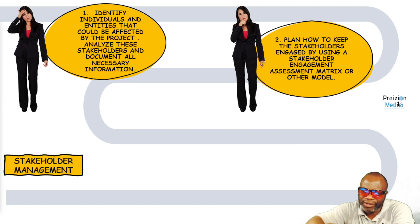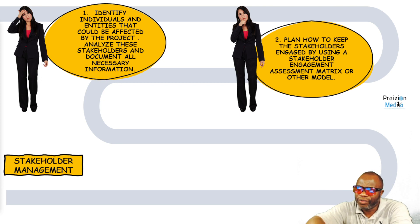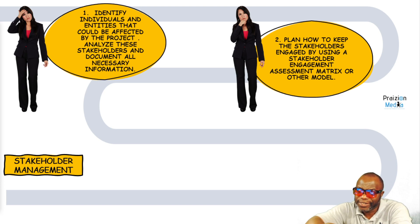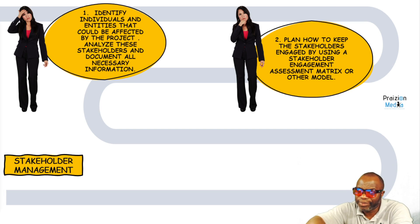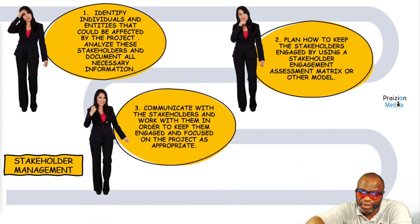The second thing is to plan stakeholder engagement. You have your stakeholder register coming into this process; you'll flesh out the understanding of the stakeholders and then plan how to keep them engaged using a stakeholder engagement assessment matrix or some other model. The outcome is a stakeholder engagement plan.